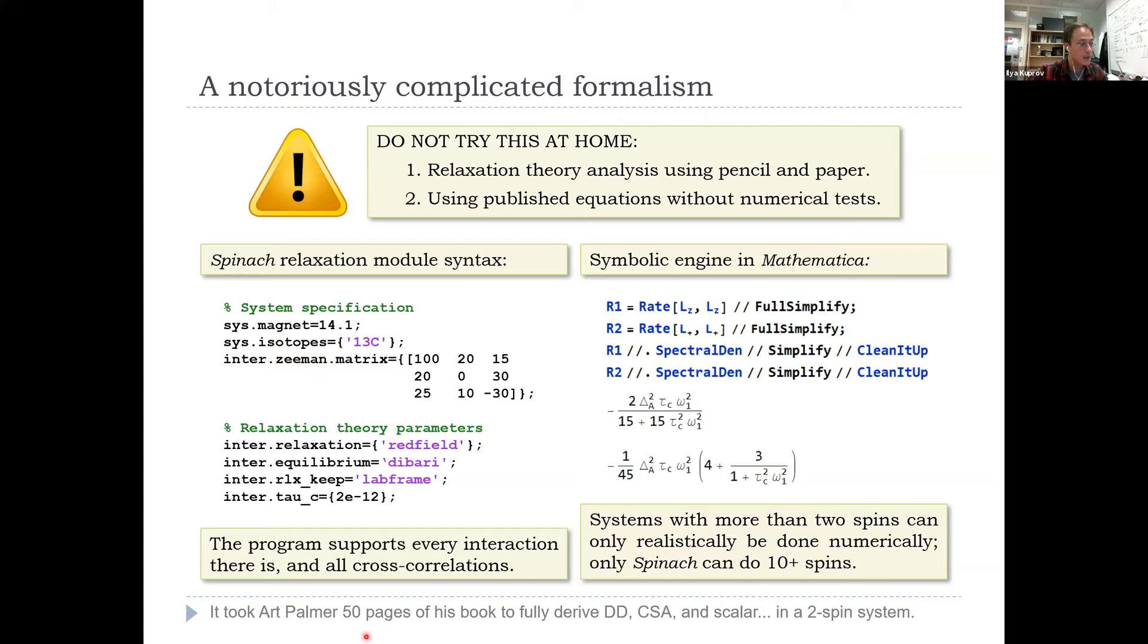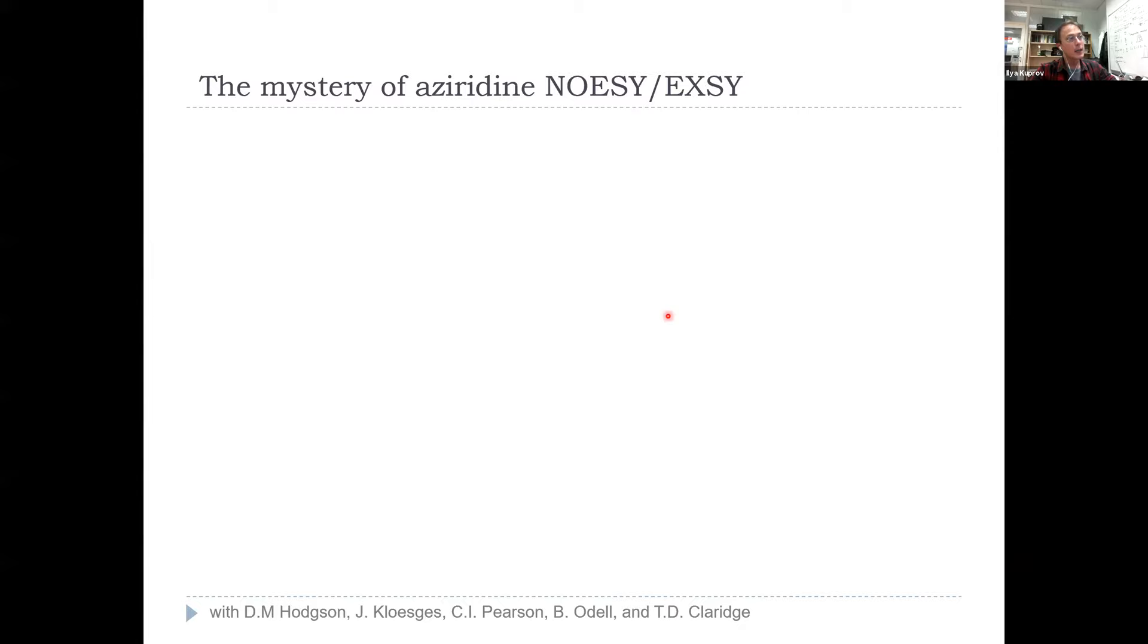To put things in context, if you do it manually and analytically, it has taken Art Palmer in his famous chapter in the protein NMR spectroscopy book over 50 pages of dense mathematics to do dipole-dipole and CSA analysis for the two spin system. So we are talking a highly advanced topic where really in most cases it's either numerical or it's not getting done.